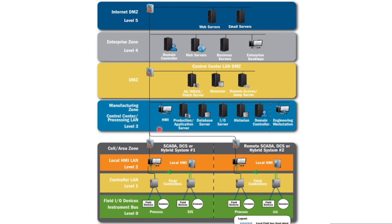At Level 2 we have the cell/area zone. At Level 3 we have the manufacturing control center with systems like database, I/O servers, and historians. In the DMZ we have patch management servers, historians, and remote access. Firewalls are placed at multiple boundaries — here, here, and here — helping with segmentation as well as monitoring traffic going in and out of each level. At the top we have the enterprise zone and internet DMZ zone, all segregated with firewalls.